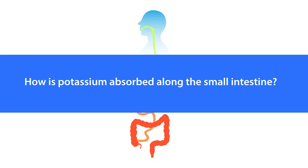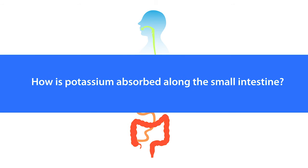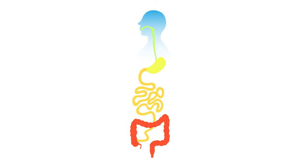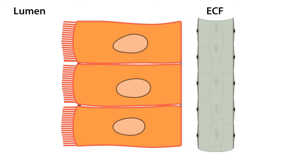How is potassium absorbed along the small intestine? Potassium absorption across the small intestinal epithelium is passive and occurs via the paracellular pathways. In other words, it passes between the cells and tight junctions, and absorption is driven by the electrochemical gradient.